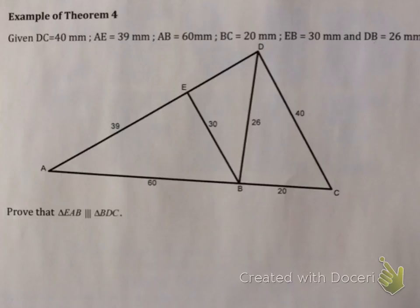So let's have a look at an example. This question says DC is equal to 40, right? The 40 is labelled. AE is equal to 39, labelled. AB is 60, labelled. BC is 20 which is labelled. EB is 30 and DB is 26. So they're all labelled in there. Prove that triangle EAB is similar to BDC.